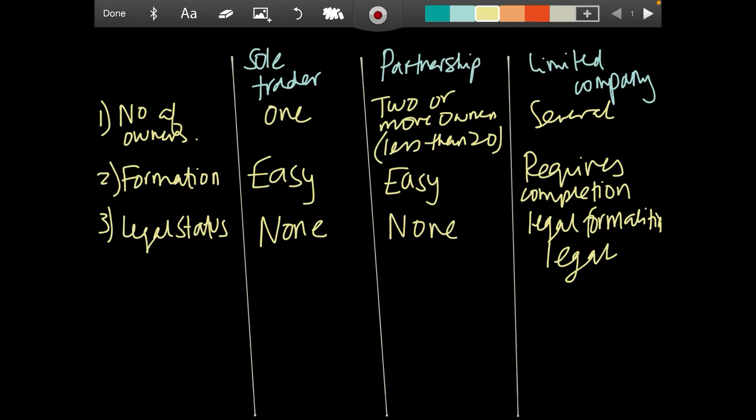The fourth point of difference is liability. Sole trader and partnership have unlimited liability. Unlimited liability basically refers to the legal obligations where the sole trader or the partners are liable for paying off their business debts.